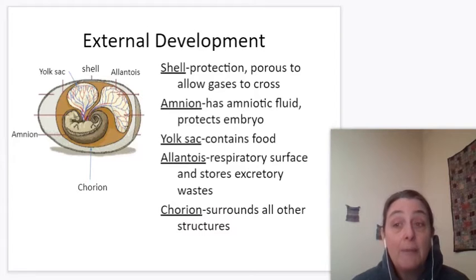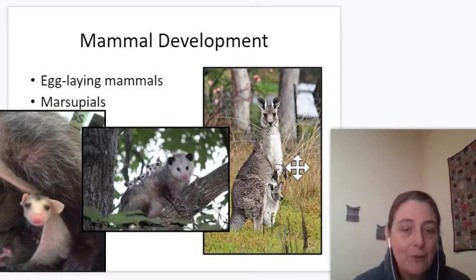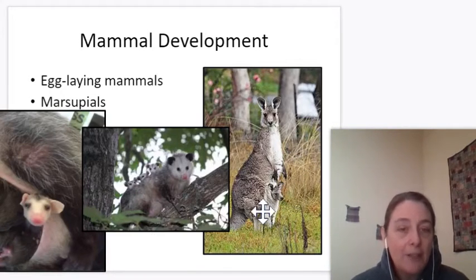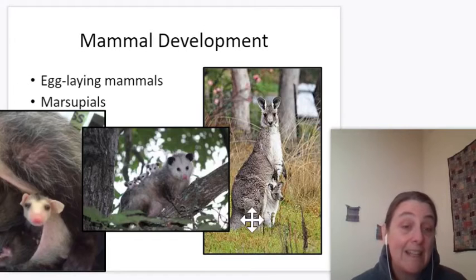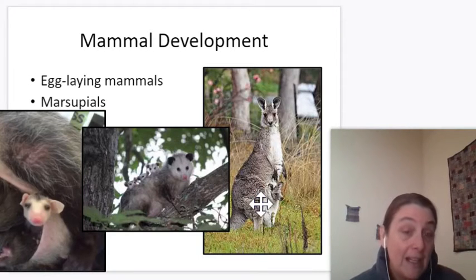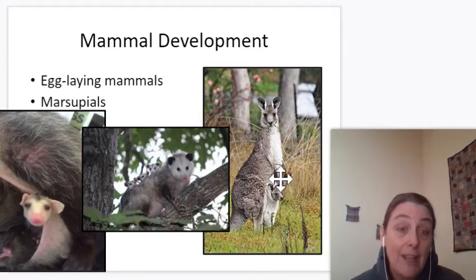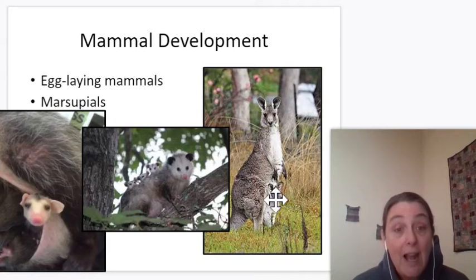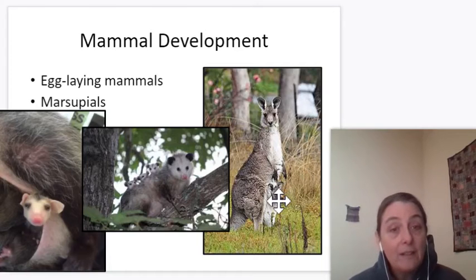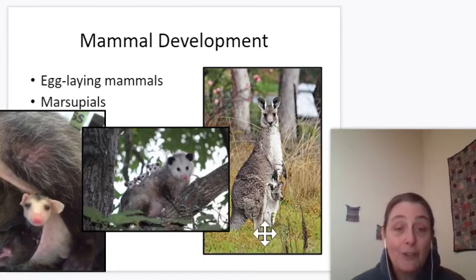In addition to egg-laying mammals, we have marsupials. Marsupials are pouched animals. There's a kangaroo with a baby in its pouch. The baby actually develops with a yolk and an allantois, just like the bird, inside the body of the kangaroo for a very short time. Then the baby is born and crawls out and gets in the pouch. There are milk glands there for the baby to get food, and it grows in the pouch. When it's ready, it can get in and out, and for a while will be carried around by mom in the pouch, giving a lot of protection to the baby, but also being able to hop out and jump around.